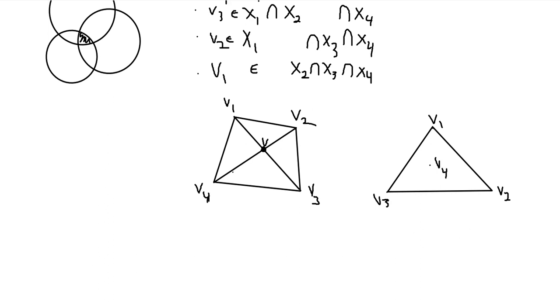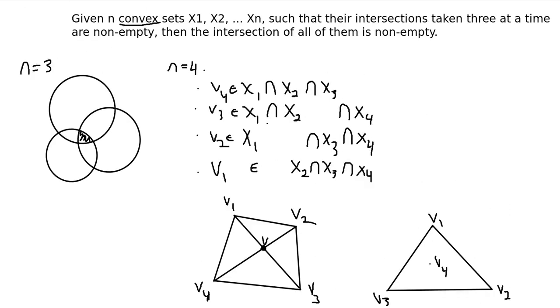So, the intersection of these two segments is on both segments, which means it's in X2 intersect X4, and it's in X1 intersect X3, which means it's in all four of the points, and that is a proof for n equals 4.